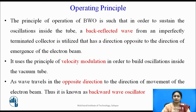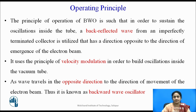The principle behind the working of the backward wave oscillator is that in order to sustain the oscillation inside the tube, a back-reflected wave from the imperfectly terminated collector is utilized, which is in a direction opposite to the direction of the electron beam. The electrons are emitted from the cathode in one direction, while the reflected waves come back from the collector. Due to this, oscillations are created in the device. These devices work on the principle of velocity modulation — the speed of the electrons changes in the vacuum tube. As the wave travels in the opposite direction to the motion of the electron beam, these oscillators are known as backward wave oscillators.